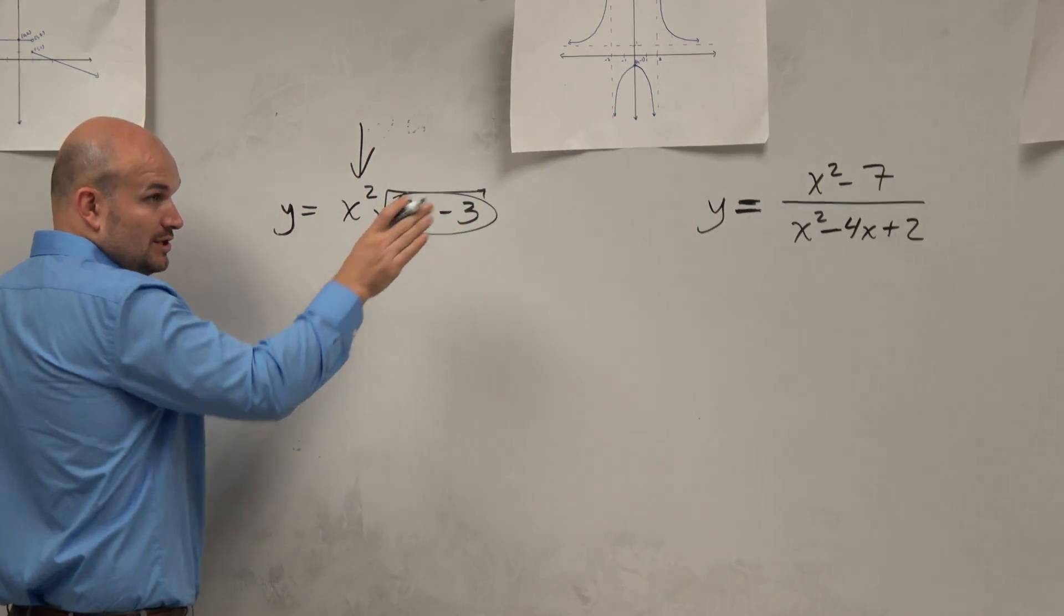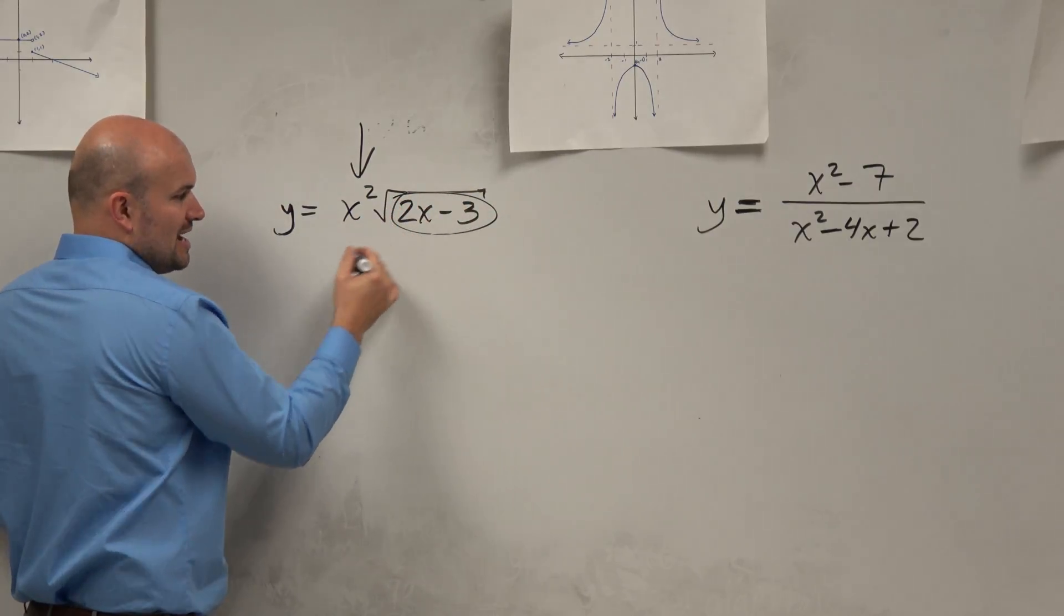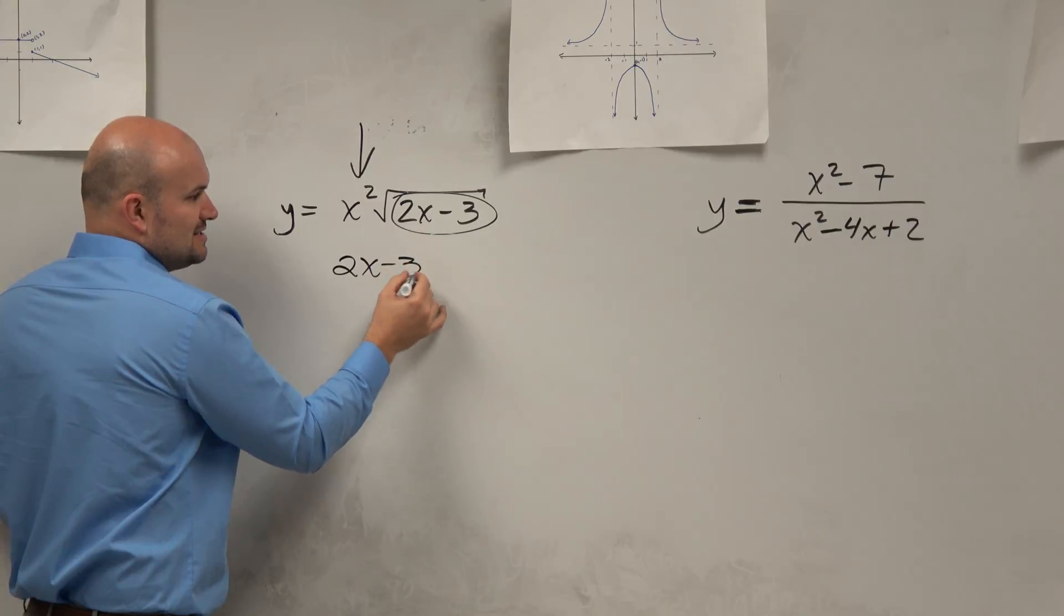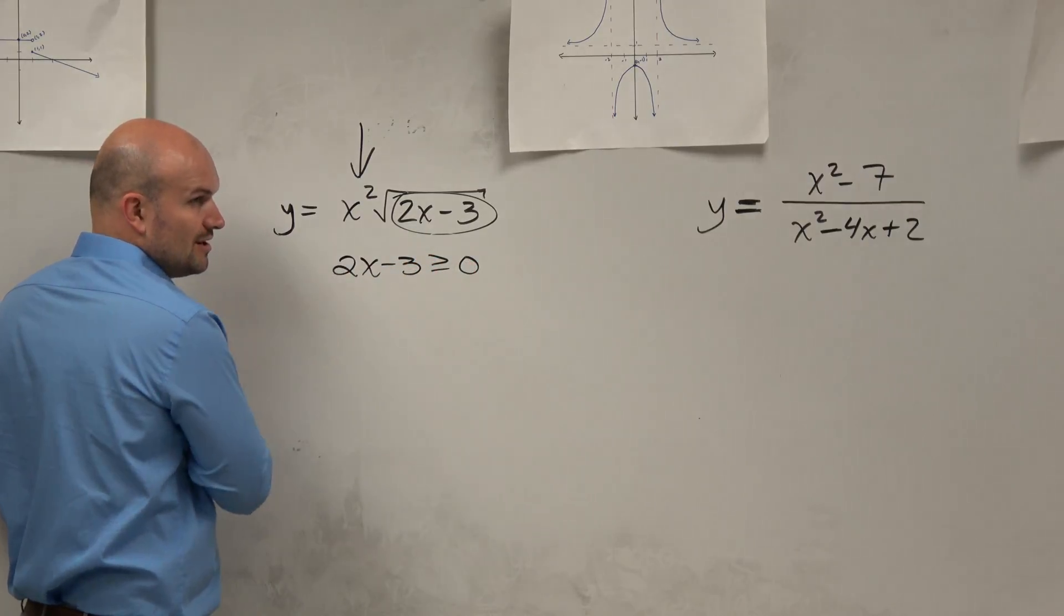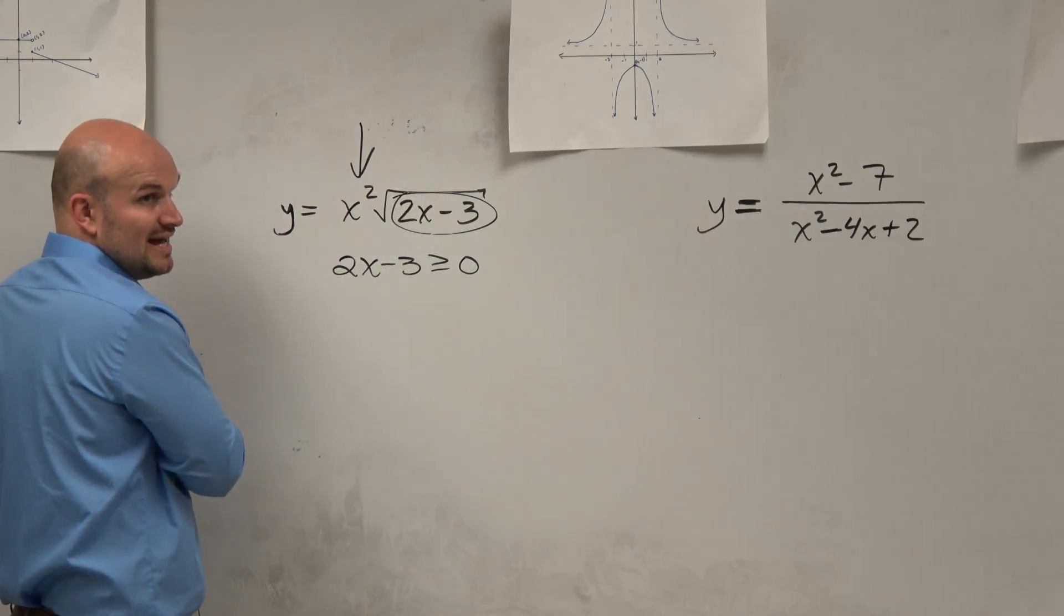So what you're going to want to do is set the radicand greater than or equal to 0. The radicand is what's under the radical. 2x minus 3 greater than or equal to 0. The domain is defined for all values when that is positive.